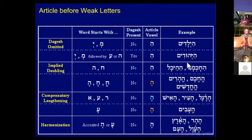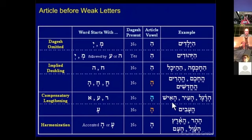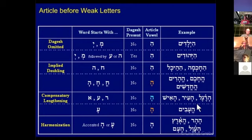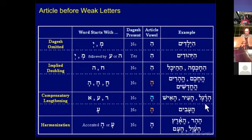Strong gutturals produce implied doubling. Weak gutturals produce compensatory lengthening — you can't double them, but the vowel that precedes them lengthens to compensate. So with Ish — meaning man — you have Ha-Ish, where the Patach changes to a Kamets. Similarly Ir — city — changes to Ha-Ir with a Kamets rather than the Patach. And with Reish — for example Regel meaning foot — again you have the Kamets. So compensatory lengthening.